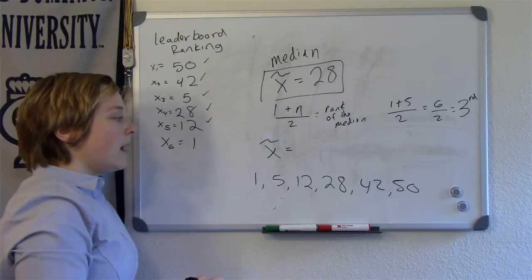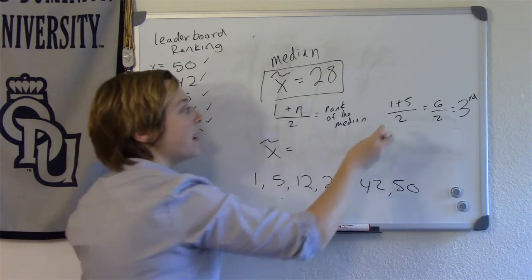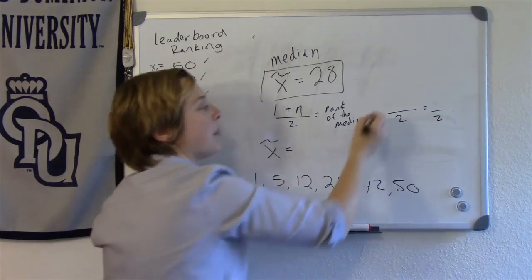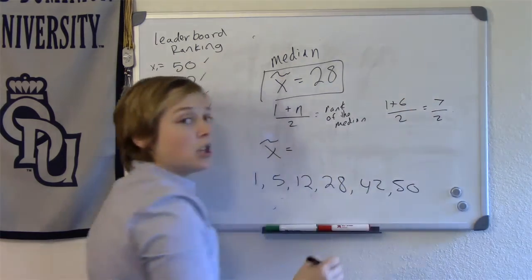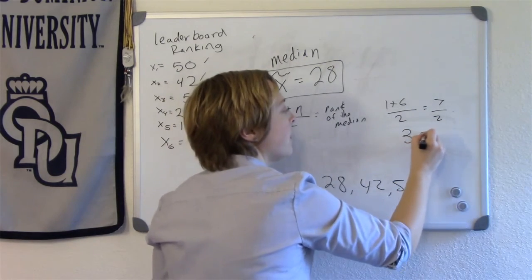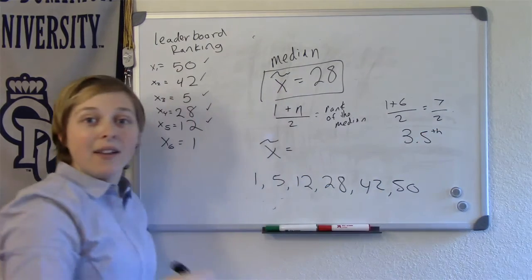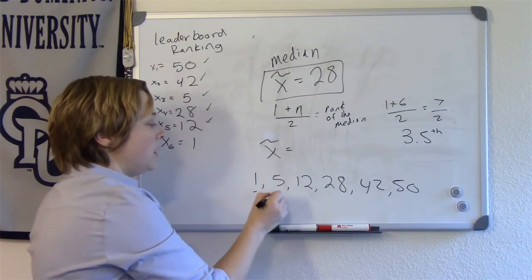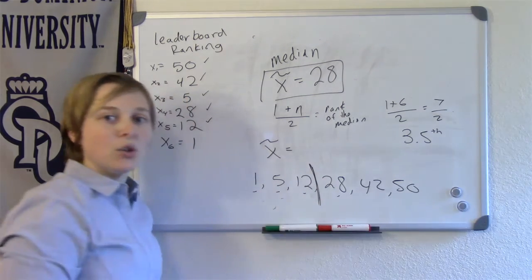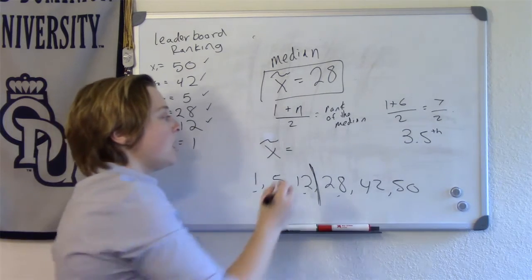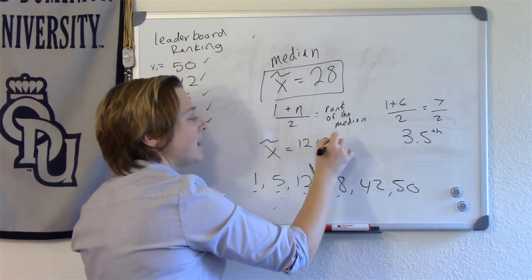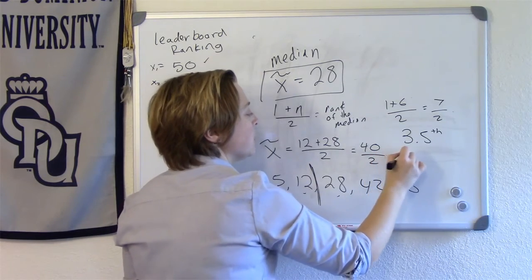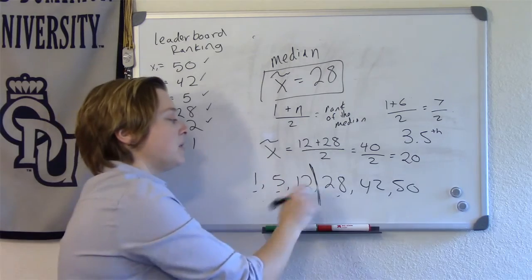So now what's x tilde? What is the median? If I were to use this formula here, instead of 1 plus 5, now it would be 1 plus 6, because we have 6 observations. So it would be 7 divided by 2. What's 7 divided by 2? 3.5. So it's the 3.5 observation that's going to be the median. Where's the 3.5 observation? It's between the 3rd and the 4th. Right here. Between these 2 observations, that's where you'll find your median. So 12 plus 28 divided by 2. That would be 40 divided by 2, which is 20. So your median would then be halfway between the 3rd and 4th.